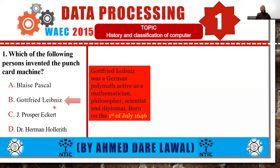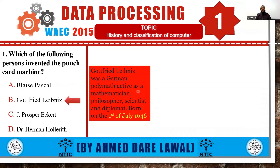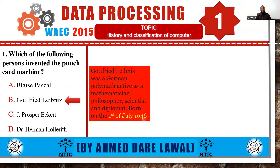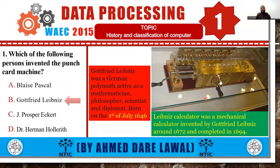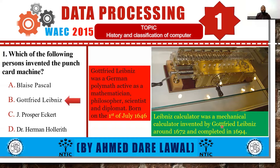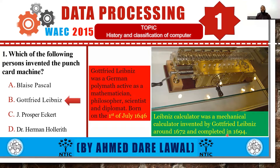Now let's look at Godfrey Leibniz. He was a German polymath, active as a mathematician, philosopher, scientist, and diplomat, born on the 1st of July, 1646. The picture we have here is the Leibniz calculator, a mechanical calculator invented by Godfrey Leibniz around 1672 and completed in 1694.